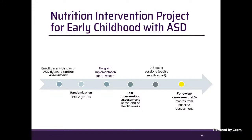In terms of study timeline: the parent-child dyad does a baseline assessment, they are randomized into the intervention or enhanced usual care control, then complete the 10 weekly sessions. We measure outcomes again after 10 weeks, then have booster sessions. About five months after baseline, we conduct the final follow-up assessment.